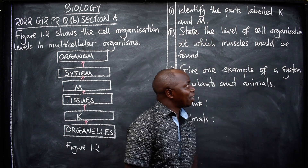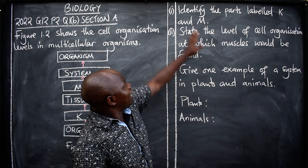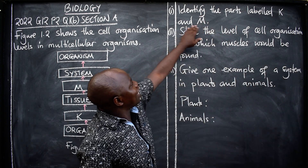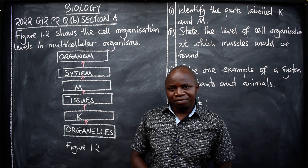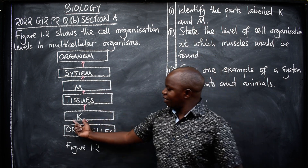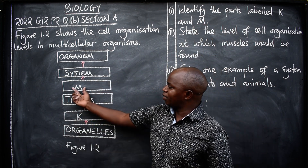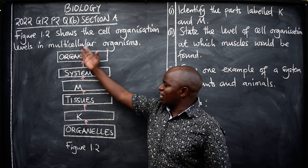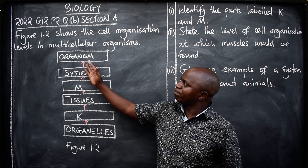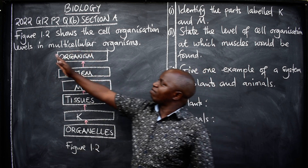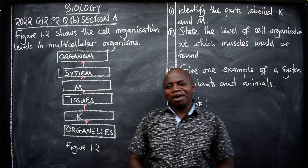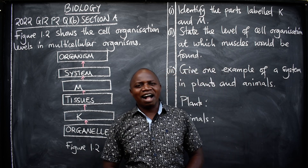So the question is: identify the parts labeled K and M. Let's get back to the figure — K is here, M is here. What exactly are we talking about? The levels in multicellular organisms.